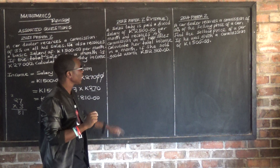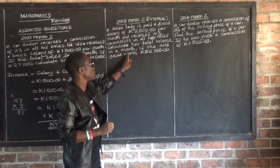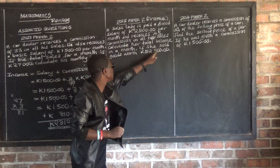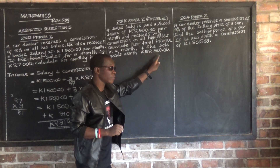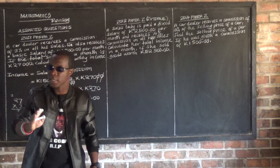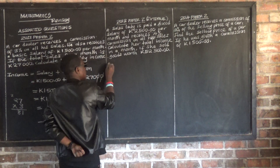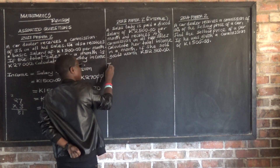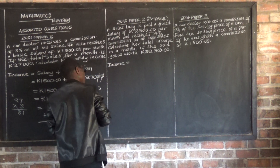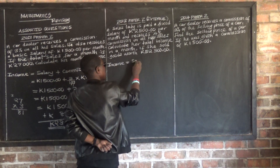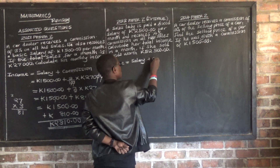The question is the same type: calculate her total income in a month if she sold goods worth $52,500. Income is equal to salary plus commission.